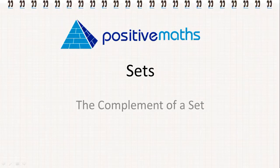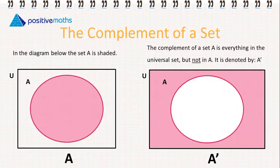In this video for positive maths, we're going to learn about the complement of a set. Let's look at the left hand side first. In the diagram below, the set A is shaded. Now we'll look at the right. The complement of a set A is everything in the universal set but not in A. It's denoted by A dash.